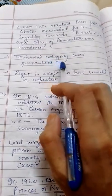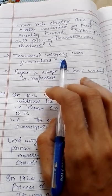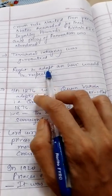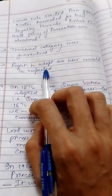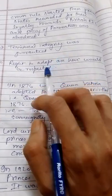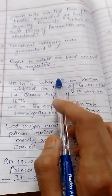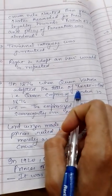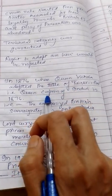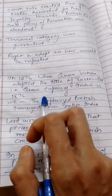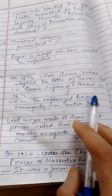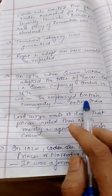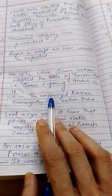What were the rewards? Territorial integrity was guaranteed to the Princely states, and they were also given wealth of their own. In 1876, when Queen Victoria adopted the title 'Kesar-e-Hind' — meaning Queen Empress of India — it emphasized British sovereignty over the entire India, making clear that British sovereignty would remain throughout India.